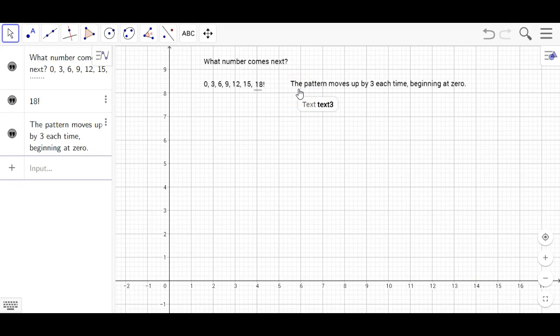Okay, so here we've described the pattern in English. It says the pattern moves up by 3 each time, beginning at zero. So we're going up by 3 each time, beginning at zero. So what would that look like if we were to write it out using math? Can you write that out using math?